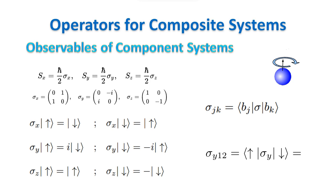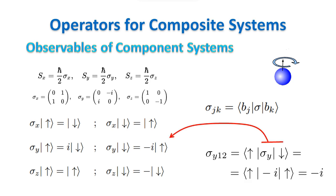In this case, BJ is the vector basis 1, which is the up state, and BK is the vector basis 2, which is the down state. Now, when sigma y acts on the down state, it gives minus i times the up state. And we get, as expected, the one-two element of the sigma y matrix.